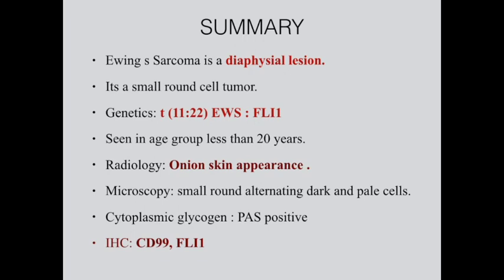To summarize: Ewing's sarcoma is a diaphyseal lesion and a small round cell tumor. There is translocation between chromosomes 11 and 22. It is seen in the age group less than 20 years. Radiology shows onion skin appearance. Microscopy shows small round alternating dark and pale cells. Glycogen is present in the cytoplasm, confirmed by PAS stain. IHC is positive for CD99 and FLI1.